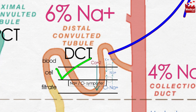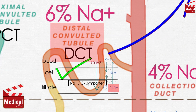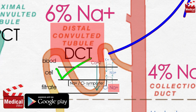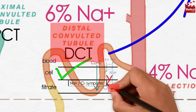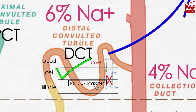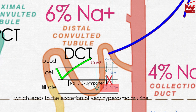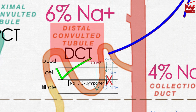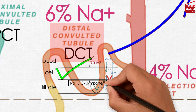They cause diuresis by decreasing sodium reabsorption, mostly from the distal convoluted tubule. This is done by inhibiting the sodium-chloride cotransporter on the luminal membrane of the tubules, increasing sodium and chloride excretion, which leads to the excretion of very hyperosmotic urine. In the DCT, sodium reabsorption is accompanied by calcium excretion in urine.